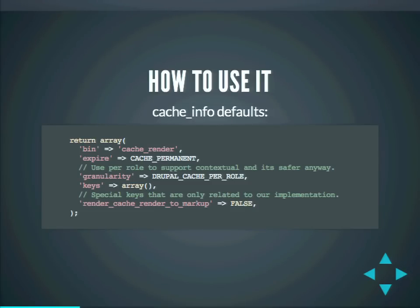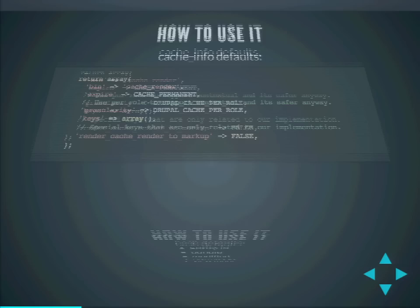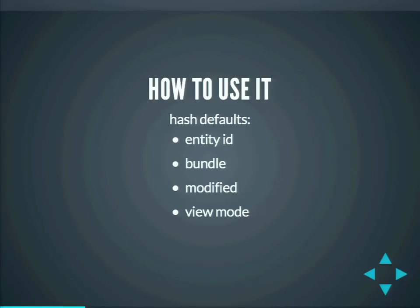In general, you will not have issues, though it's actually more complicated in some special cases. You also have a hook to define the hashes you want to use. By default, it uses the entity ID, the bundle, the modified time, and the view mode. That modified time is the reason why invalidation just works — hashing the modification time of the entity makes sure you're always automatically displaying the updated entity.